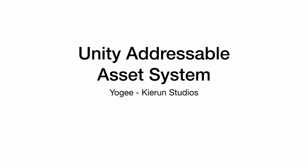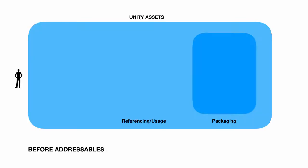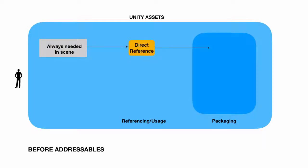Let's take a quick look at the Unity Addressable Asset System. Before the addressable system, the way a developer uses Unity assets is: first, he needs to decide if the asset is always needed in a scene, and if yes, he just directly references that asset, and that asset is packaged along with the build.